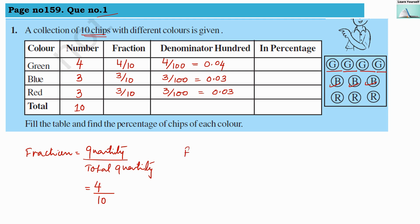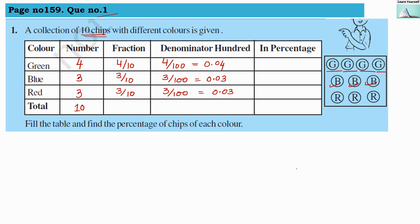To convert a fraction into percentage, we multiply by 100. We have four green color chips out of ten chips total. If ten chips are 100 percent, and out of those ten chips we have four chips, how many percent are those four chips?